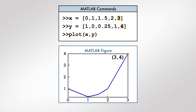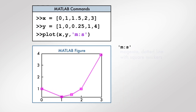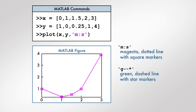We can add markers to the points by using a third input to the plot function. The third input contains characters surrounded by single quotation marks that specify the format of the graph. In this particular example, the line will be a magenta dotted line with square markers. A few other examples of the third input to the plot function are given. Try experimenting with other possibilities and combinations to see the effect on the graph.